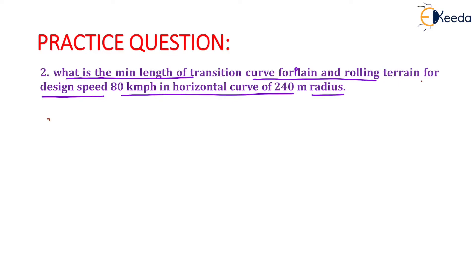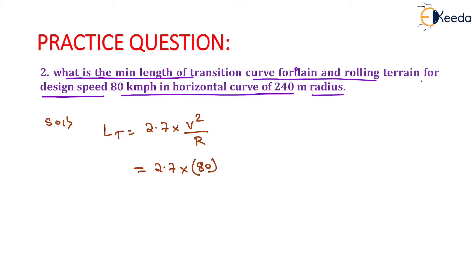For plane and rolling terrain, we know that the length of transition curve will be equal to 2.7 V squared upon R. The value of V is given as 80 kilometers per hour, so it will be equals to 80 squared upon 240 meters. On solving this, we get the length of transition curve as 72 meters.